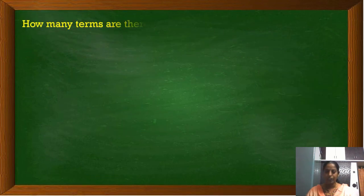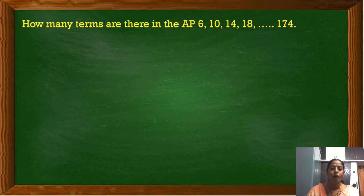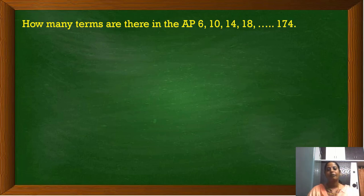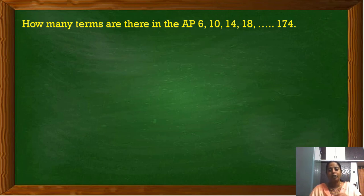Let us move on to the next question. How many terms are there in the AP: 6, 10, 14, 18, etc., up to 174? If we know the last term, it is a finite arithmetic progression. We know how to calculate a term of an AP. Here we are going to calculate the number of terms if we know the last term of the AP.